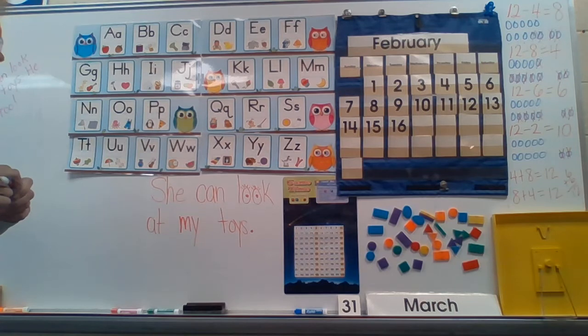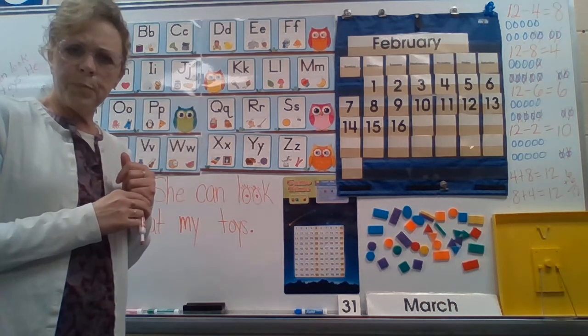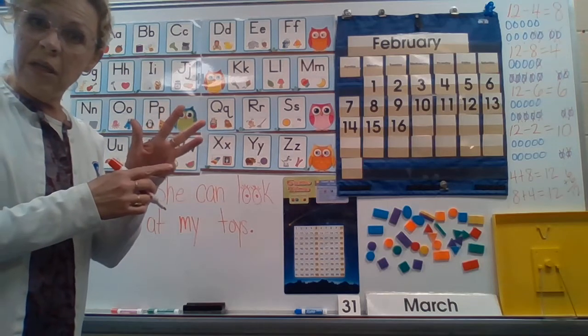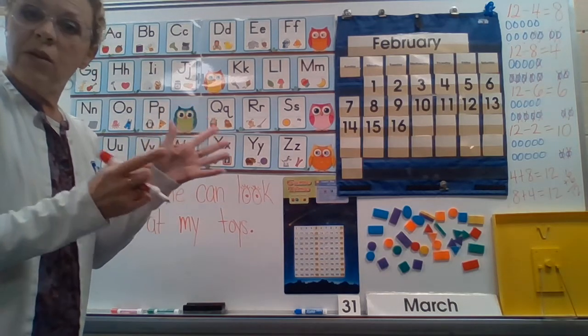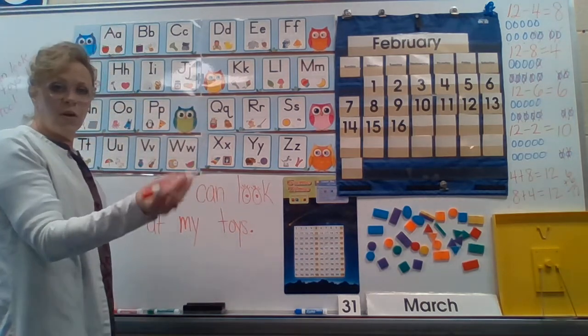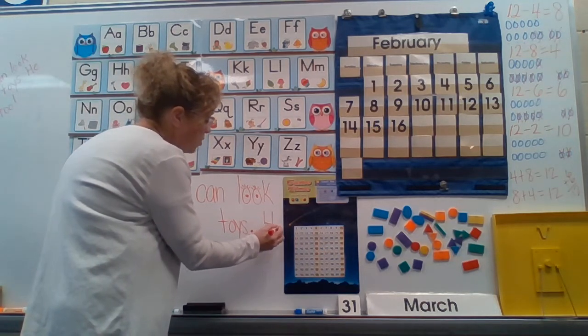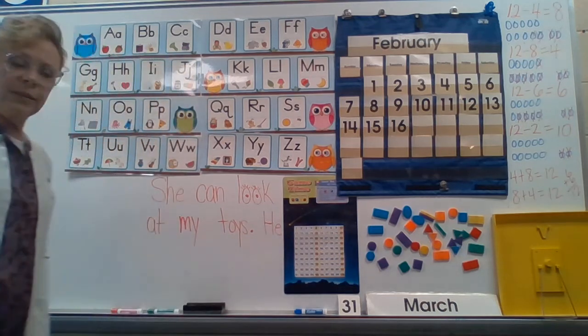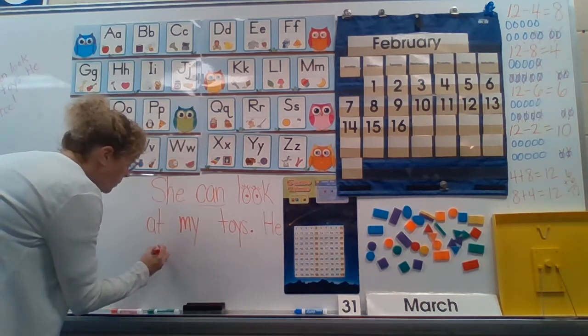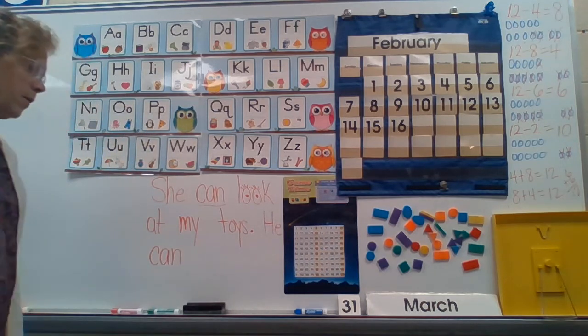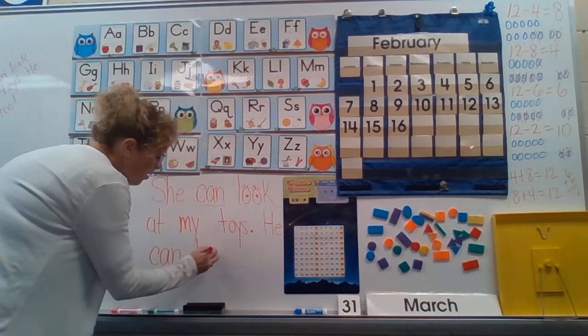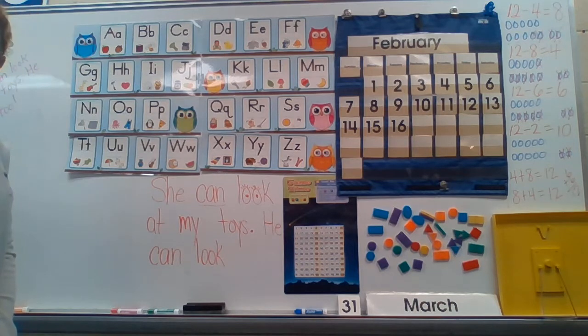And then how about let's try to make another sentence with 'he.' How about 'He can look too.' Maybe the little girl has a brother that's with her and maybe he can look at her toys too. He can look too—four words. Now we're going to write 'he' but we're going to use capital H because I was starting a new sentence. Capital H-E. Here's 'can,' we already know how to spell 'can': C-A-N. I'm going to write my fun sight word 'look' again: L-O-O-K.